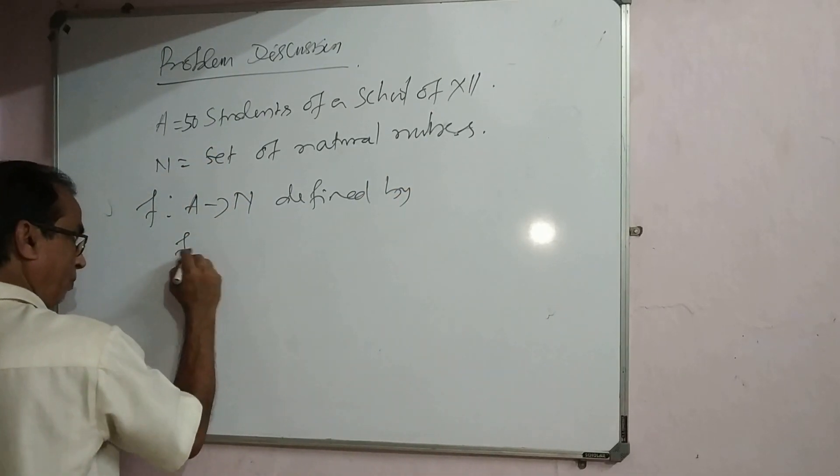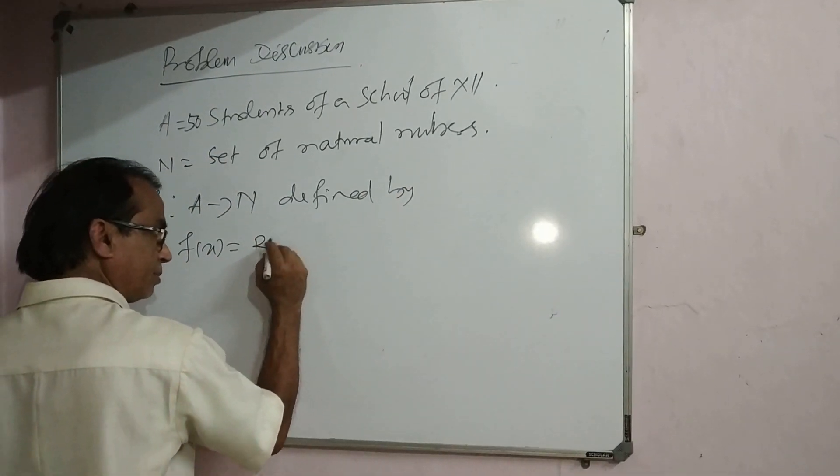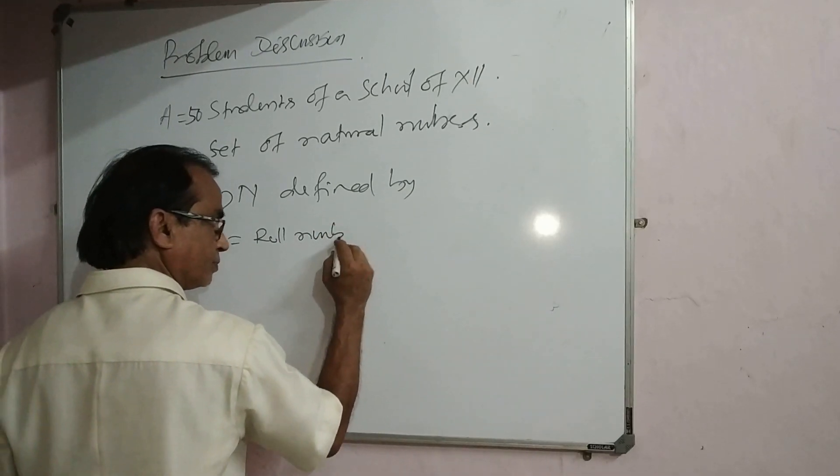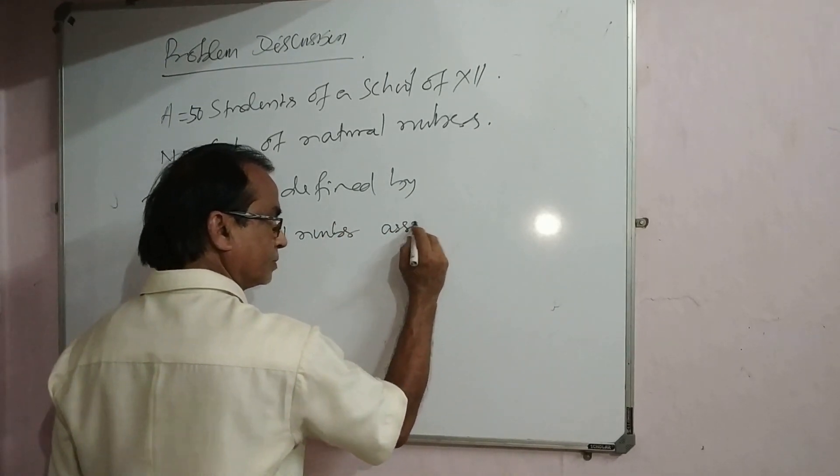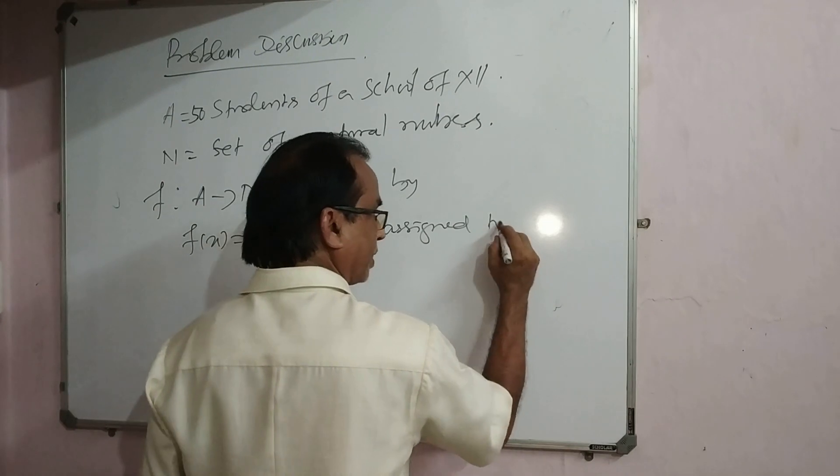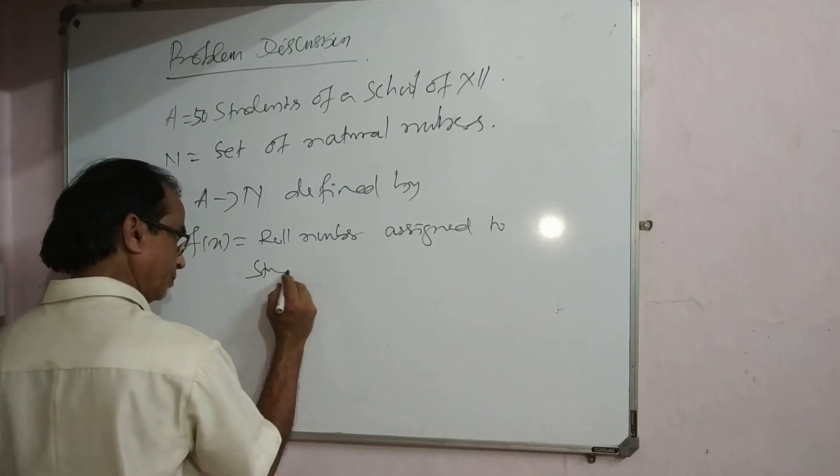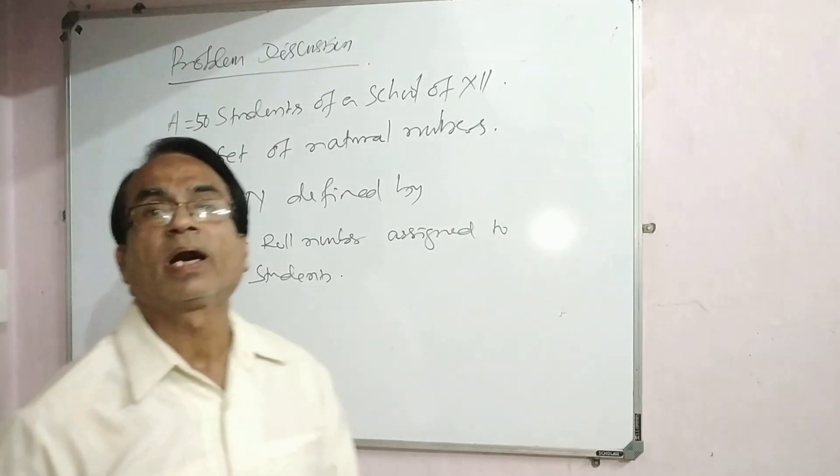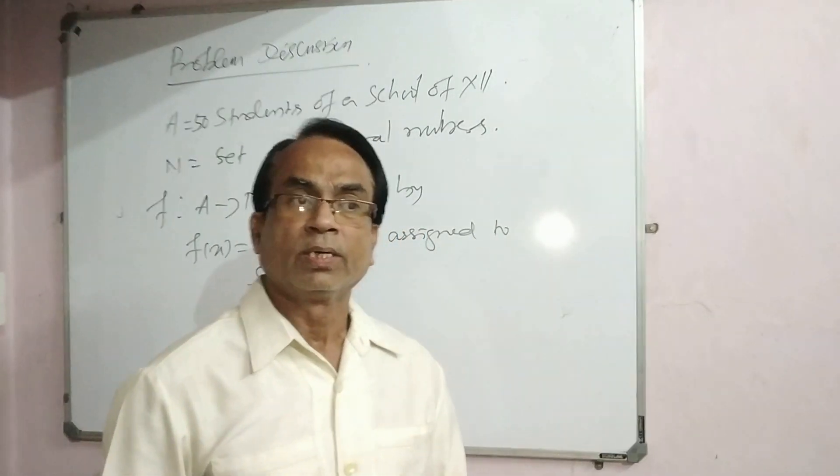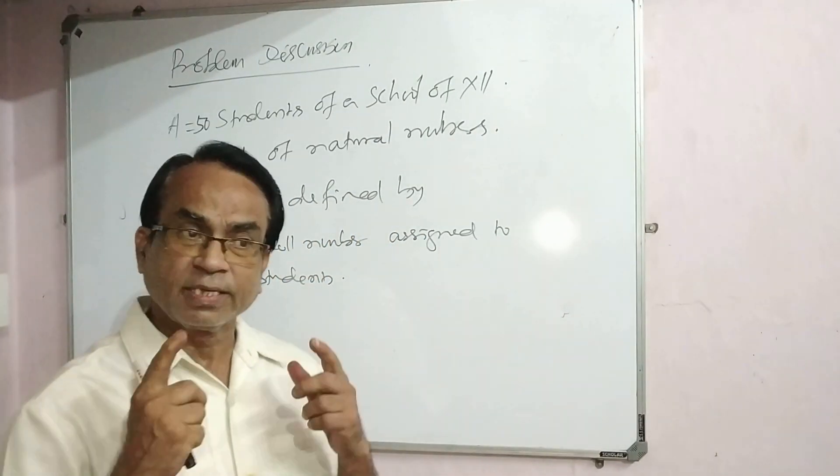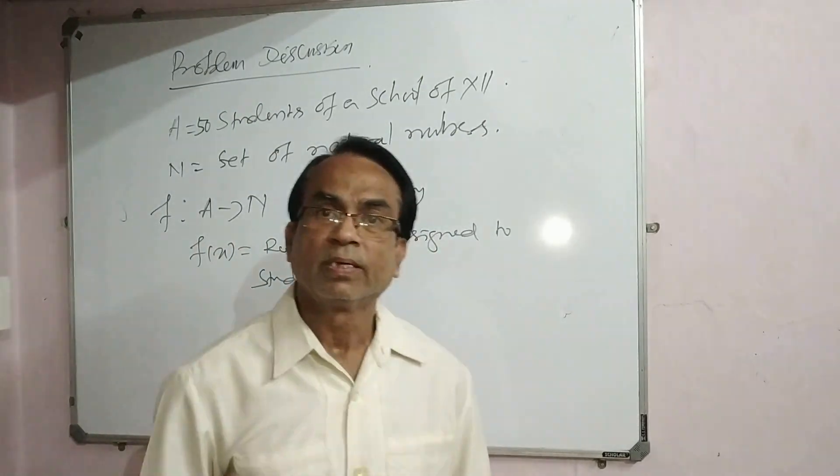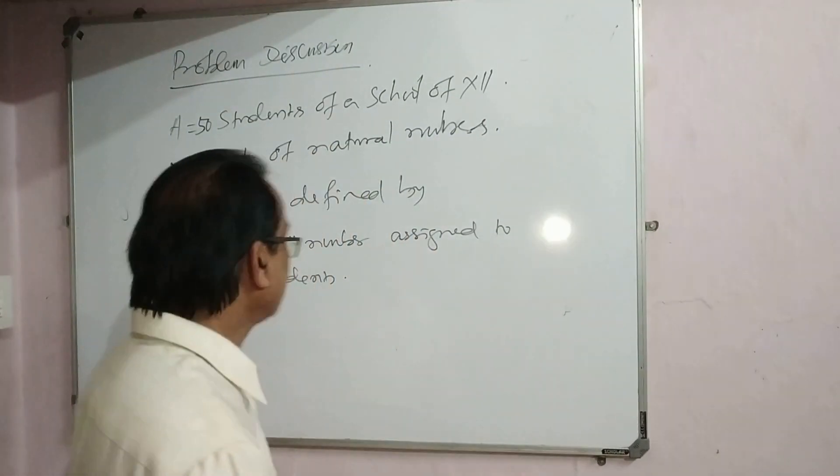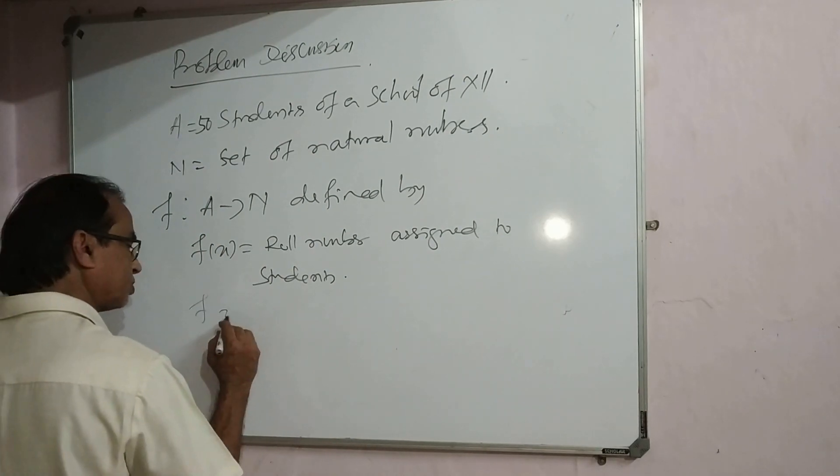F is a function from A to N defined by f(x) equals roll number assigned to student. First of all, every student has a roll number and distinct students have distinct roll numbers.